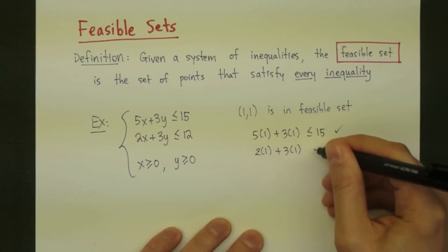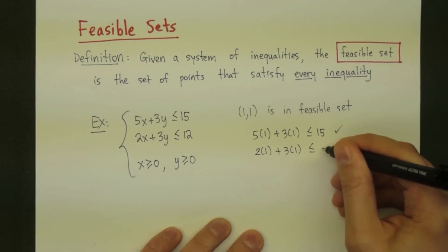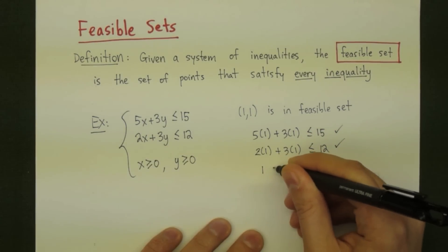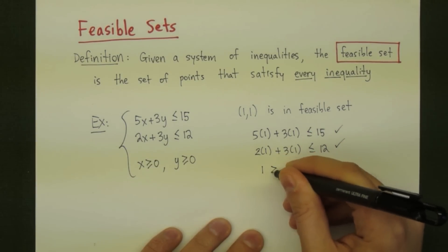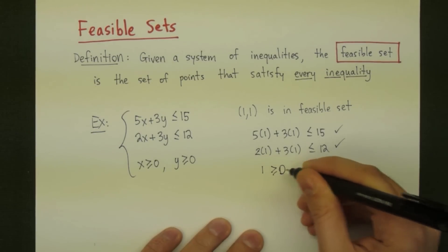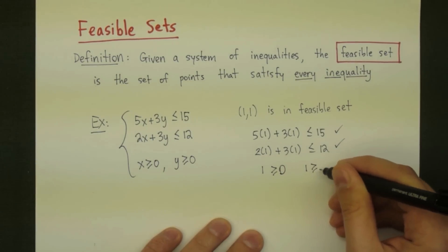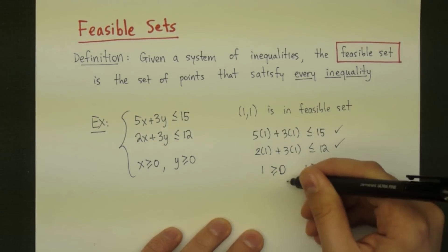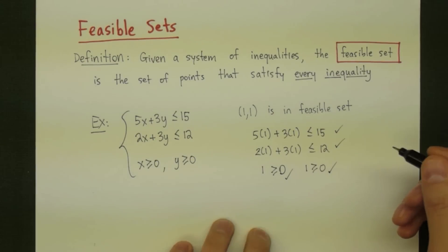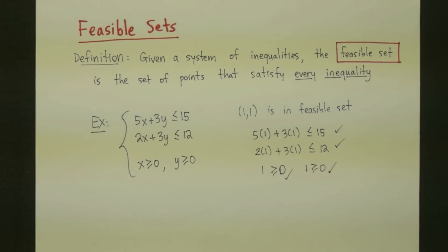For the second inequality, 2 times 1 plus 3 times 1 is 5, which is less than or equal to 12. Then 1 for x is greater than or equal to 0, and 1 for y is greater than or equal to 0. All four inequalities are satisfied, so the point (1, 1) is in the feasible set.